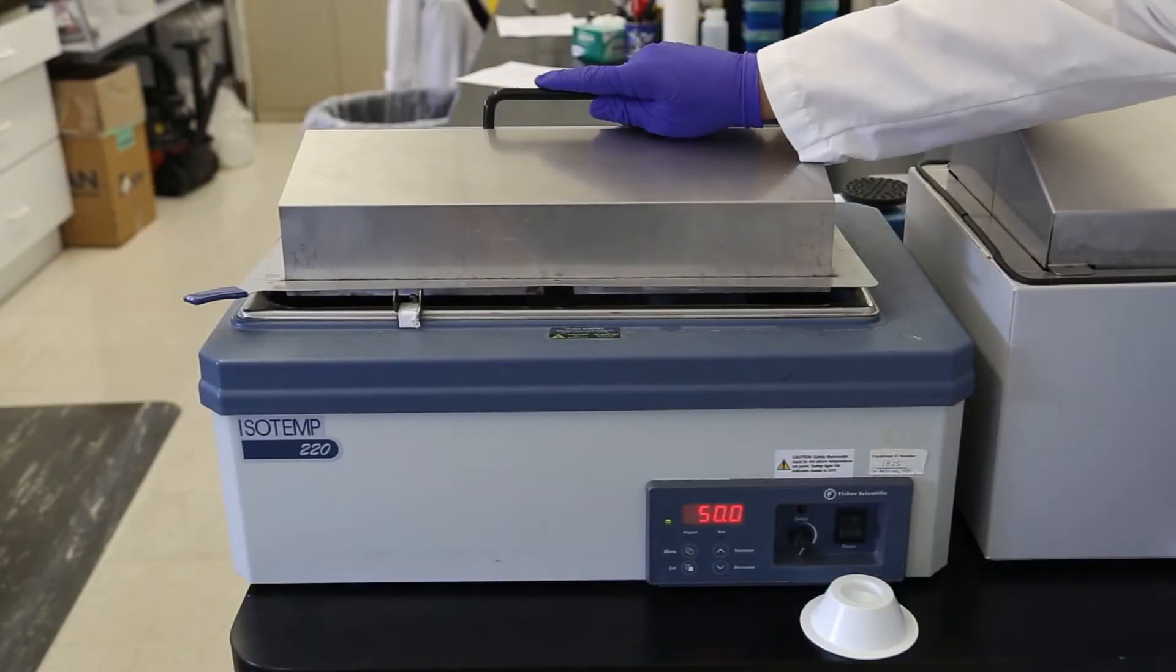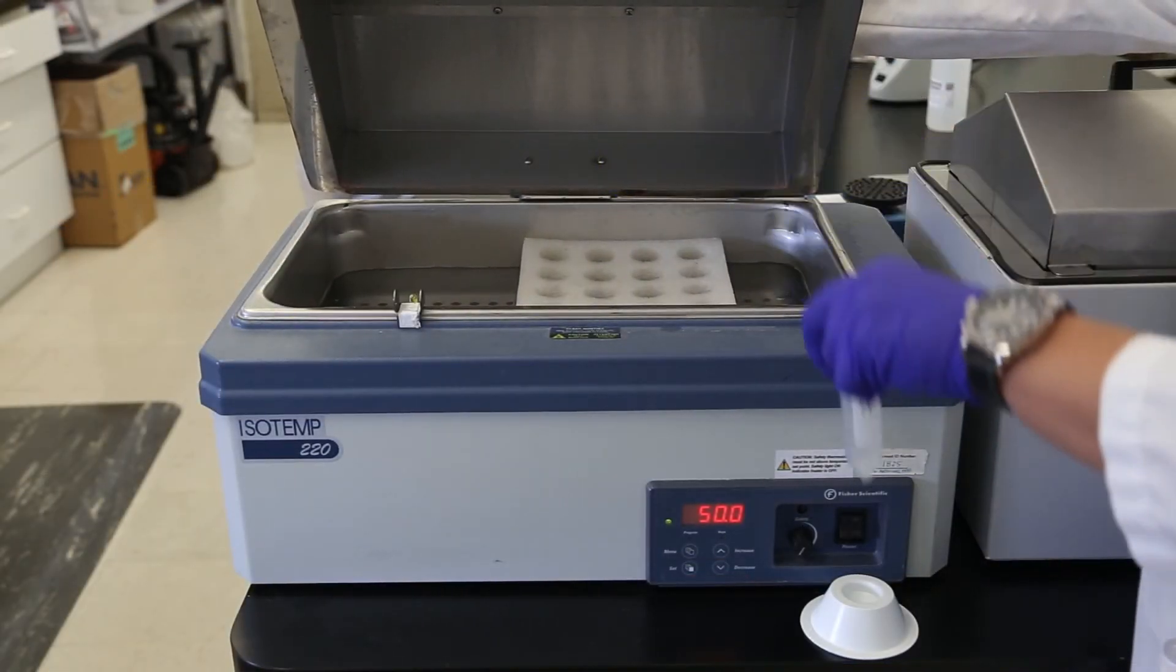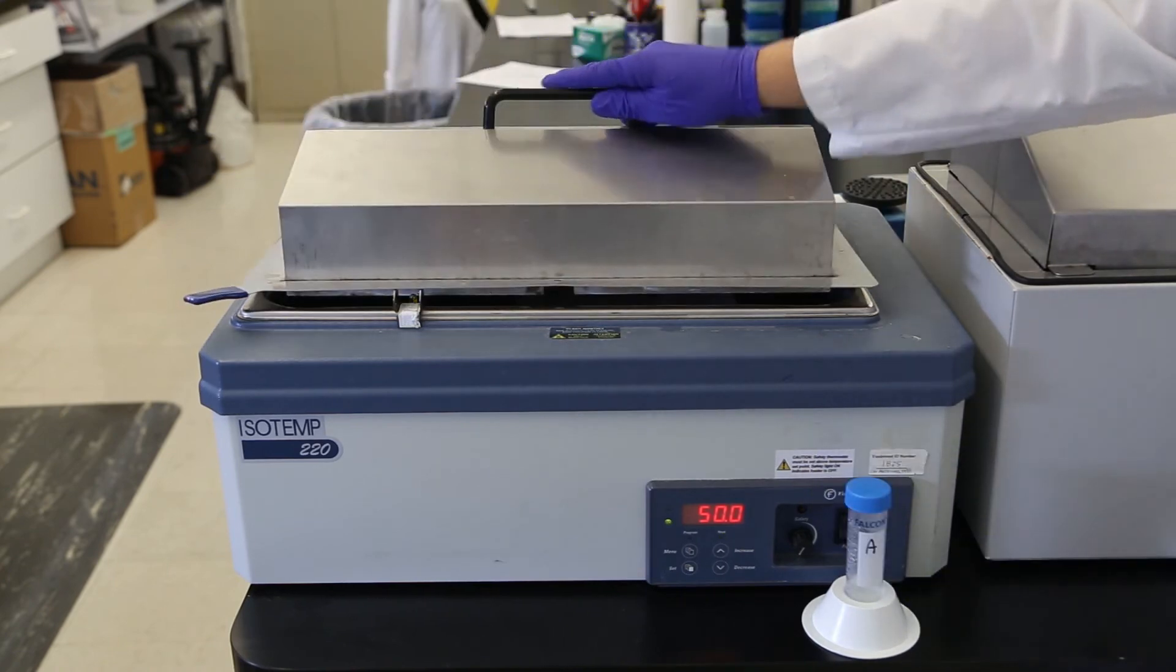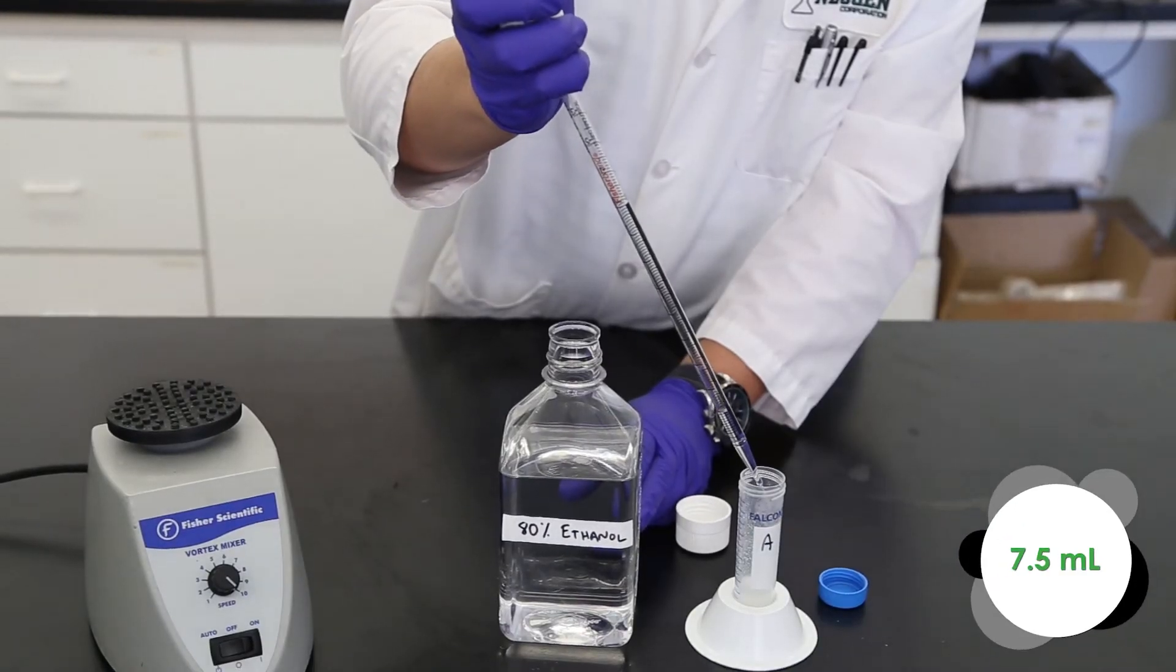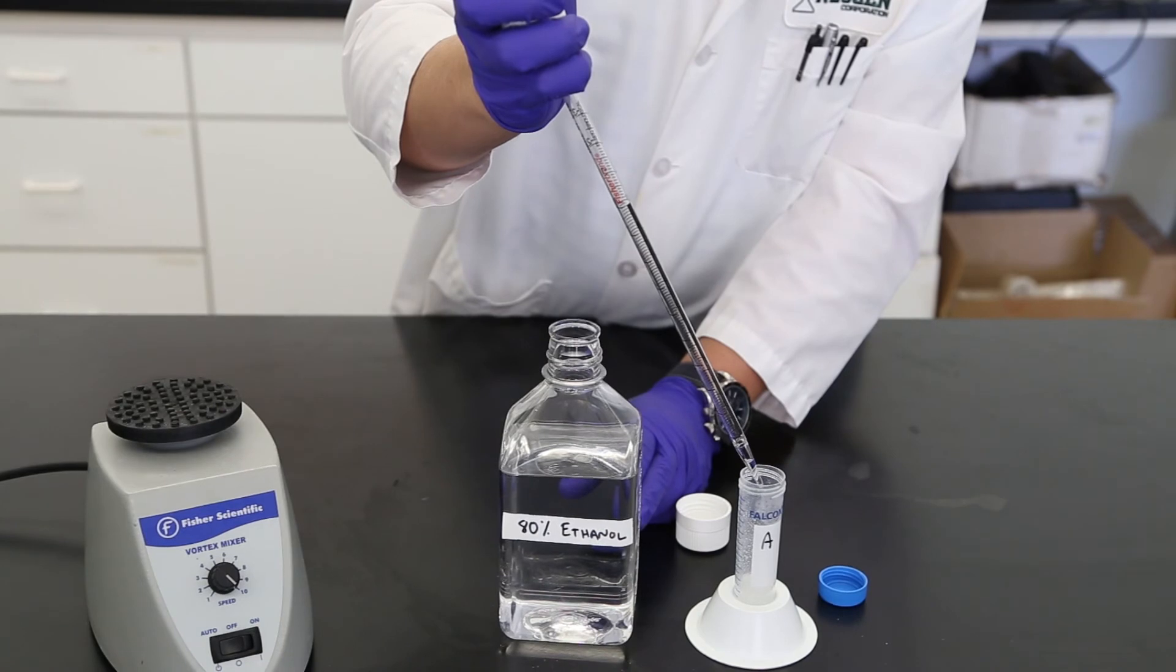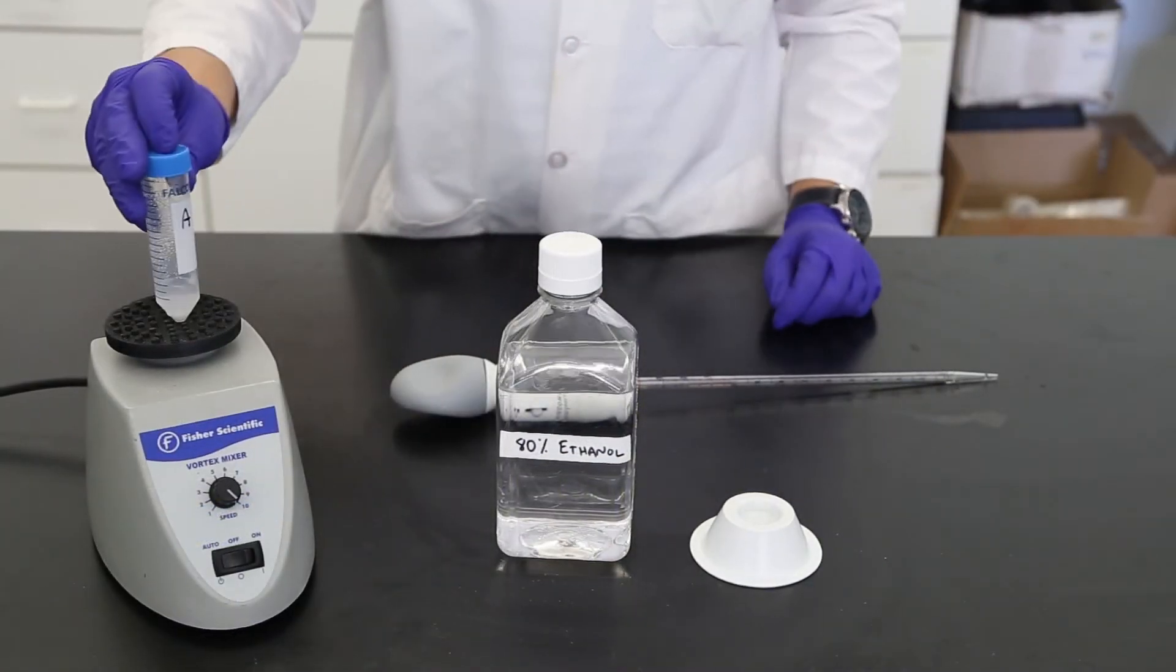Remove your samples from the water bath or oven and let them cool for 5 to 10 minutes. Add 7.5 milliliters of 80% ethanol to the tube and vortex for 10 to 20 seconds.